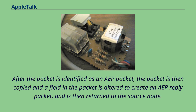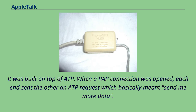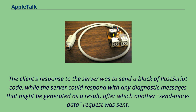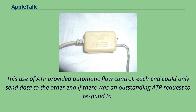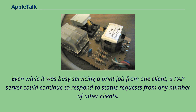PAP was the standard way of communicating with PostScript printers, built on top of ATP. When a PAP connection was opened, each end sent the other an ATP request which basically meant 'send me more data.' The client's response to the server was to send a block of PostScript code, while the server could respond with any diagnostic messages generated as a result. This use of ATP provided automatic flow control. Even while busy servicing a print job from one client, a PAP server could continue to respond to status requests from other clients, allowing other Macs on the LAN to display status messages indicating the printer was busy.